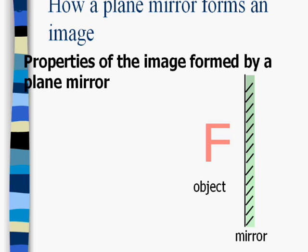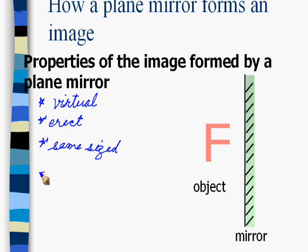Properties of the image formed by a plane mirror: First, as we cannot take it on a screen, it is a virtual type of image. Being virtual, it is erect. It is same-sized as the object, and it is at the same distance as the object is from the mirror.